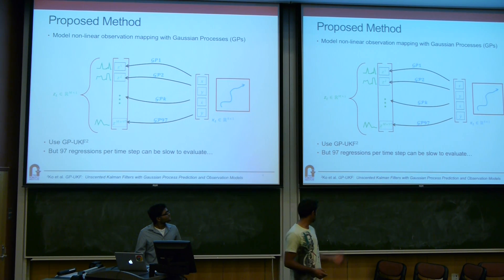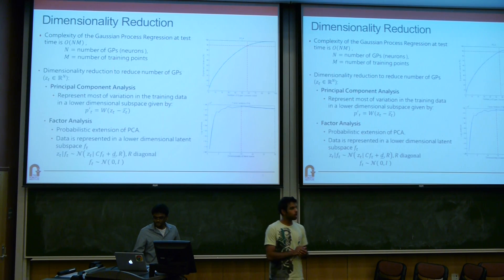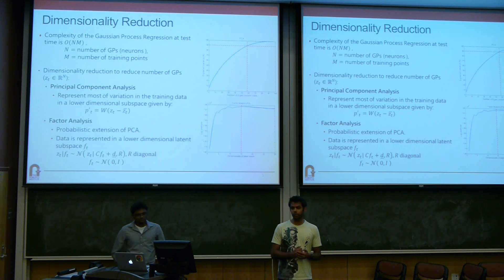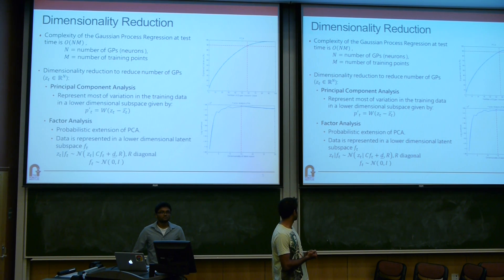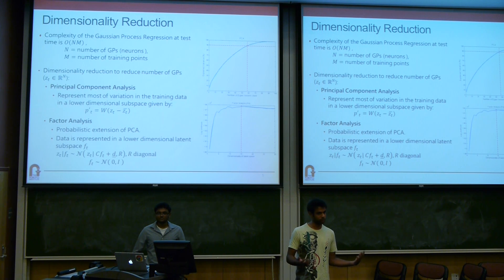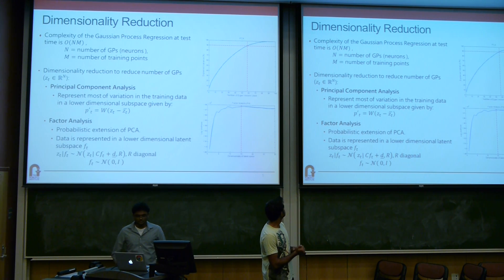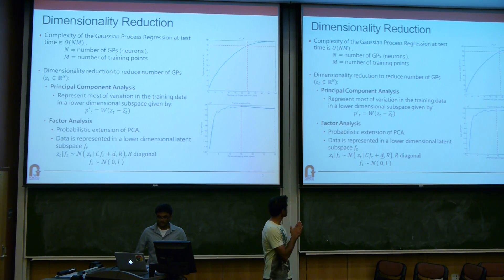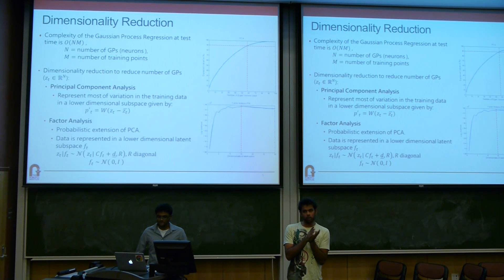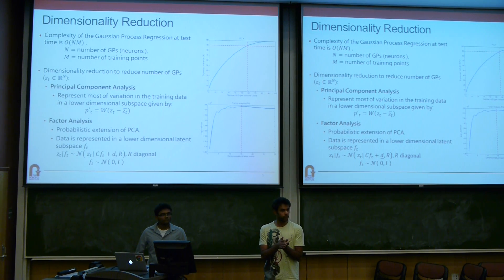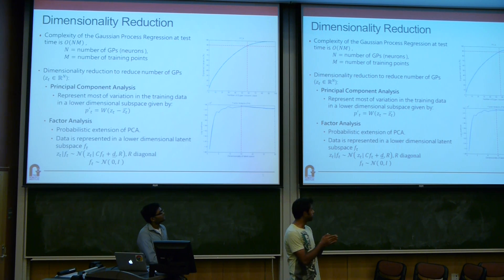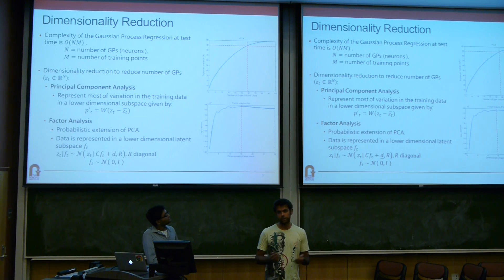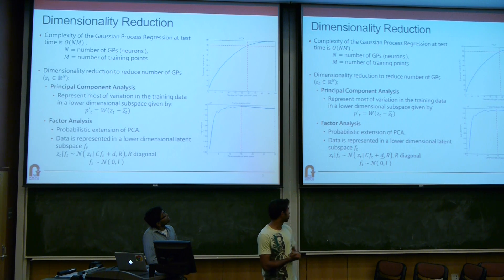If you want more details on that, the reference is right up here. But GP regression is a little bit slow, and running 97 of them at each time step will basically mean your monkey's never going to do anything in real time. So what do we do? There is reason to believe that we don't really need all 97 dimensions to explain this neural activity, so we can hope to reduce the dimensionality of the space and reduce the number of GPs we have to regress at each time point.